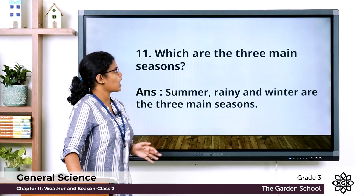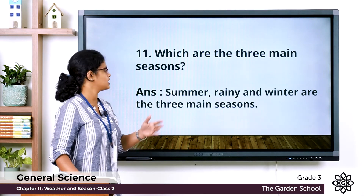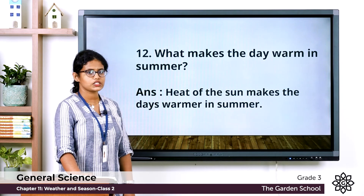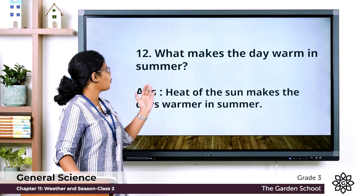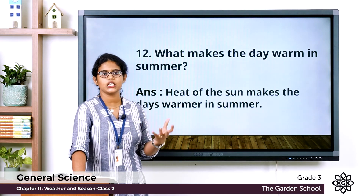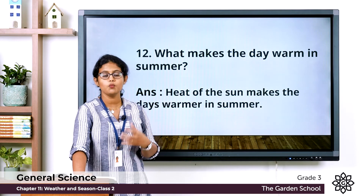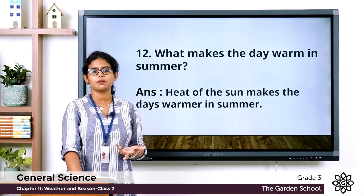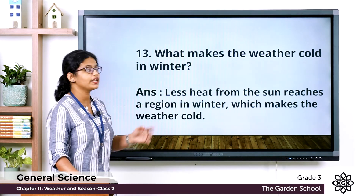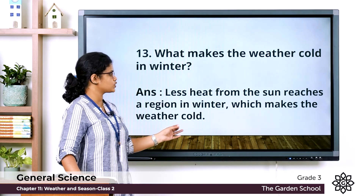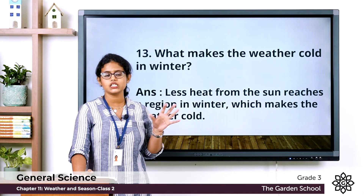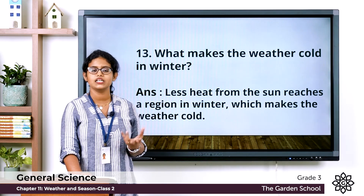Eleventh: which are the three main seasons? Summer, rainy, and winter. Twelfth: what makes the day warm in summer? Heat of the sun makes the days warmer in summer — more heat from the sun reaches the region. Thirteenth: what makes the weather cold in winter? Less heat from the sun reaches a region in winter, which makes the weather cold.